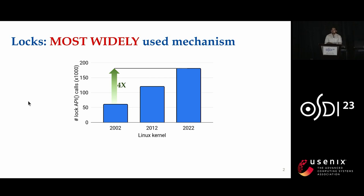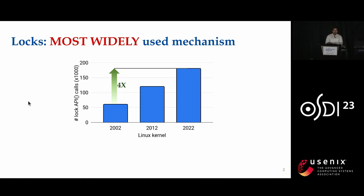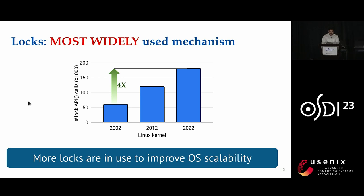Applications are becoming highly concurrent to extract performance out of modern hardware. Locks are the most widely used synchronization mechanism in concurrent applications as they provide an easy interface to application developers. Examples include SpinLock, Mutexes, and Reader-Writer semaphores. The graph shows the popularity of locks in the Linux kernel — the number of lock API calls in 2002, 2012, and 2022 — showing the kernel is increasingly using more locks as it moves from coarse-grained to fine-grained locking.